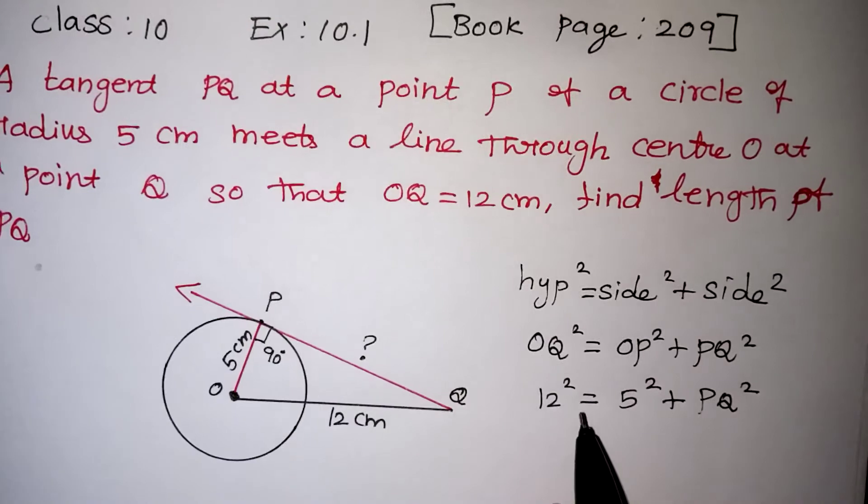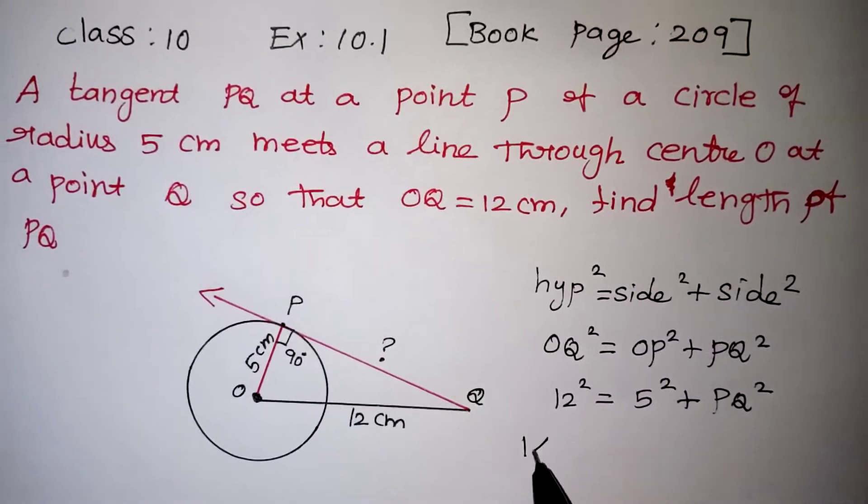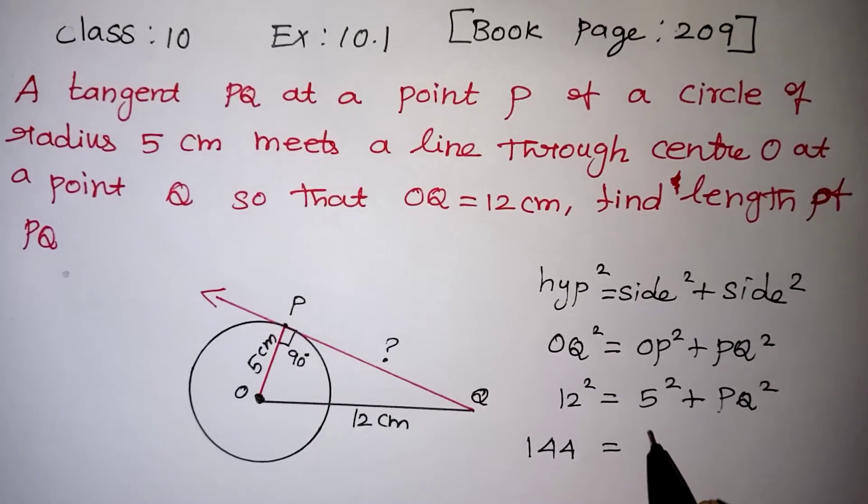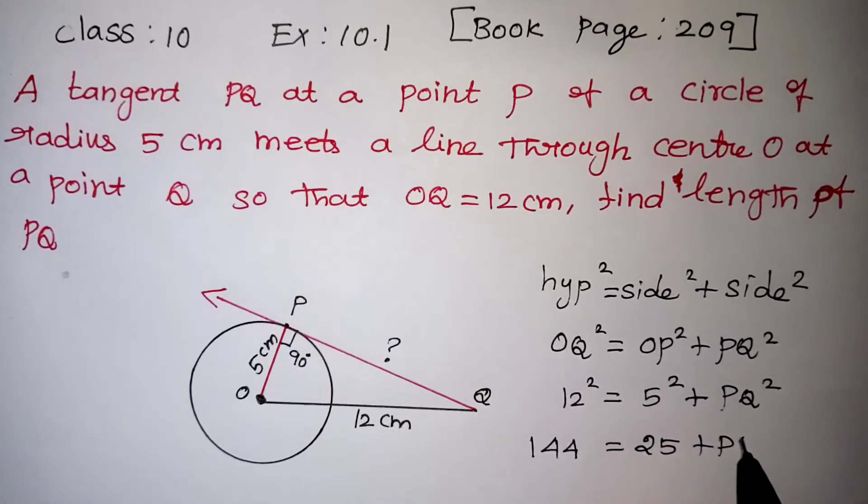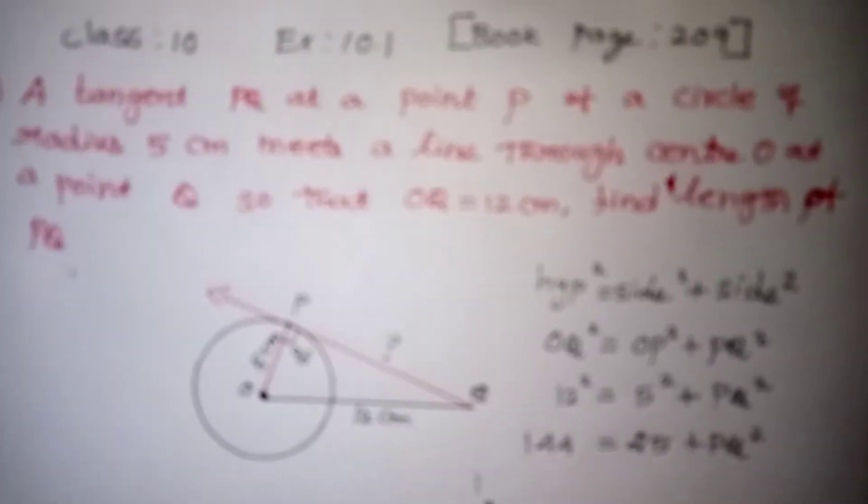That's what we need to find out. 12 squared, 12 times 12 is 144, which equals 5 squared, 5 times 5 is 25, plus PQ squared. Now the plus 25 you need to bring to this side, that will become minus.